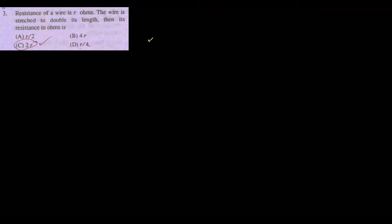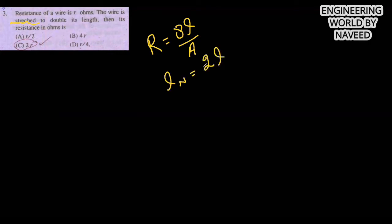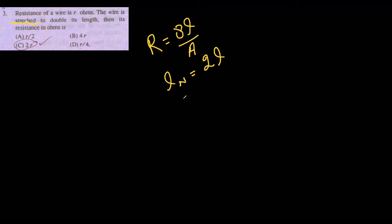Next MCQ: the resistance of a wire is R ohm. The wire is stretched to double its length — what is its new resistance in ohms? The resistance formula is R = ρL/A. The wire is stretched to double its length, so the new length L_new equals 2L. When the length doubles, the area becomes half, so A_new equals A/2.